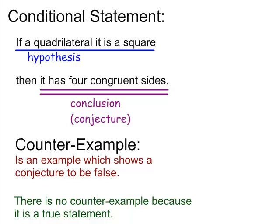A conditional statement starts out with an 'if,' and then you're going to conclude something. The hypothesis, underlined in blue, is: if a quadrilateral is a square — that's the hypothesis, that's what you're starting out with. And then you're going to conclude that it has four congruent sides. Is this a true statement? If a quadrilateral is a square, then it has four congruent sides — yes, squares have four congruent sides, so that is a true statement.